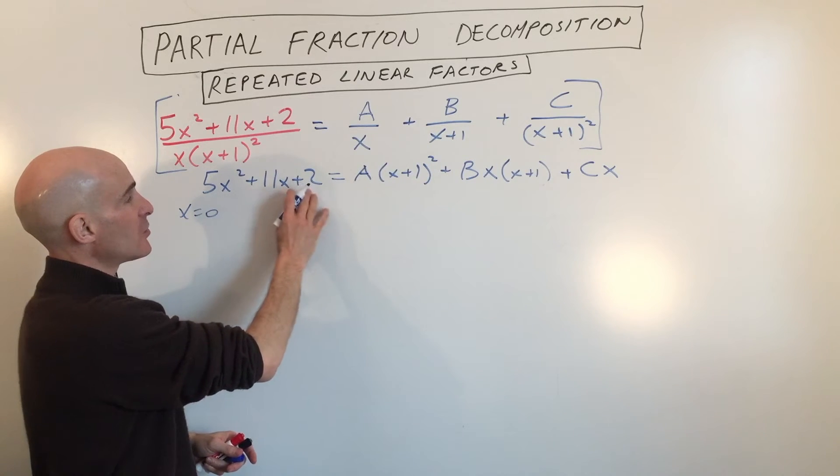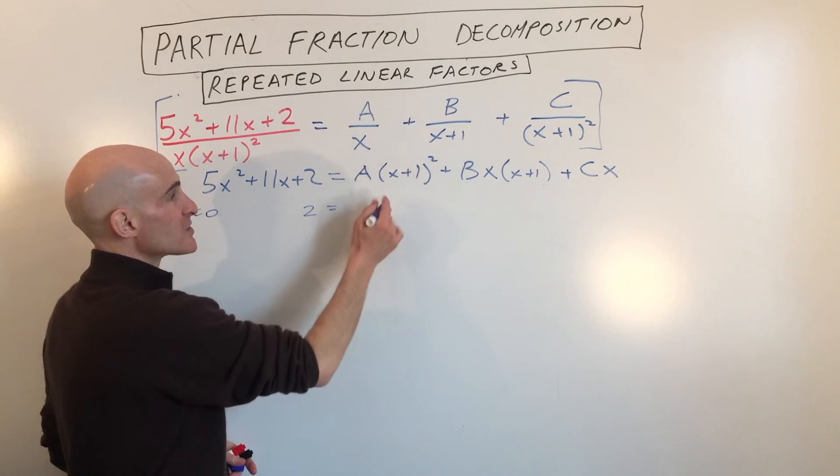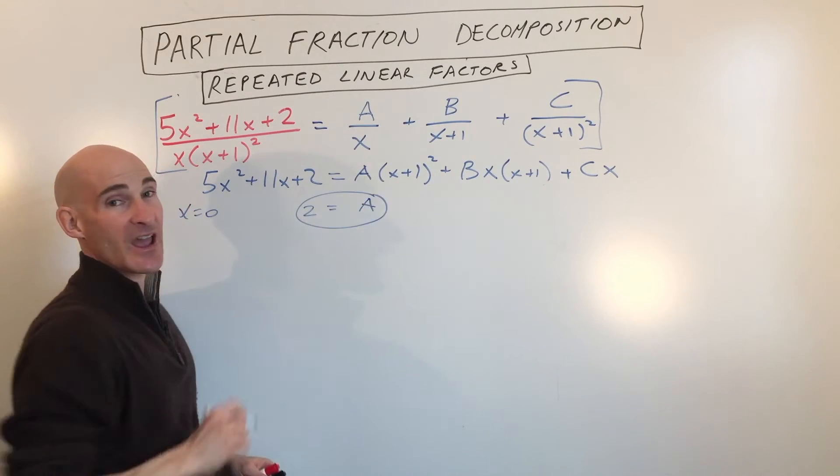So that's going to make this 0 plus 0 plus 2 equals 0 plus 1 is 1, 1 squared is 1. That's going to be A. Okay, so we solve for A.